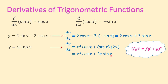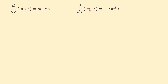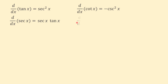Derivative of tangent of x equals secant squared of x. Derivative of cotangent of x equals negative cosecant squared of x. Derivative of secant of x equals secant of x times tangent of x. And derivative of cosecant of x equals negative cosecant of x times cotangent of x.